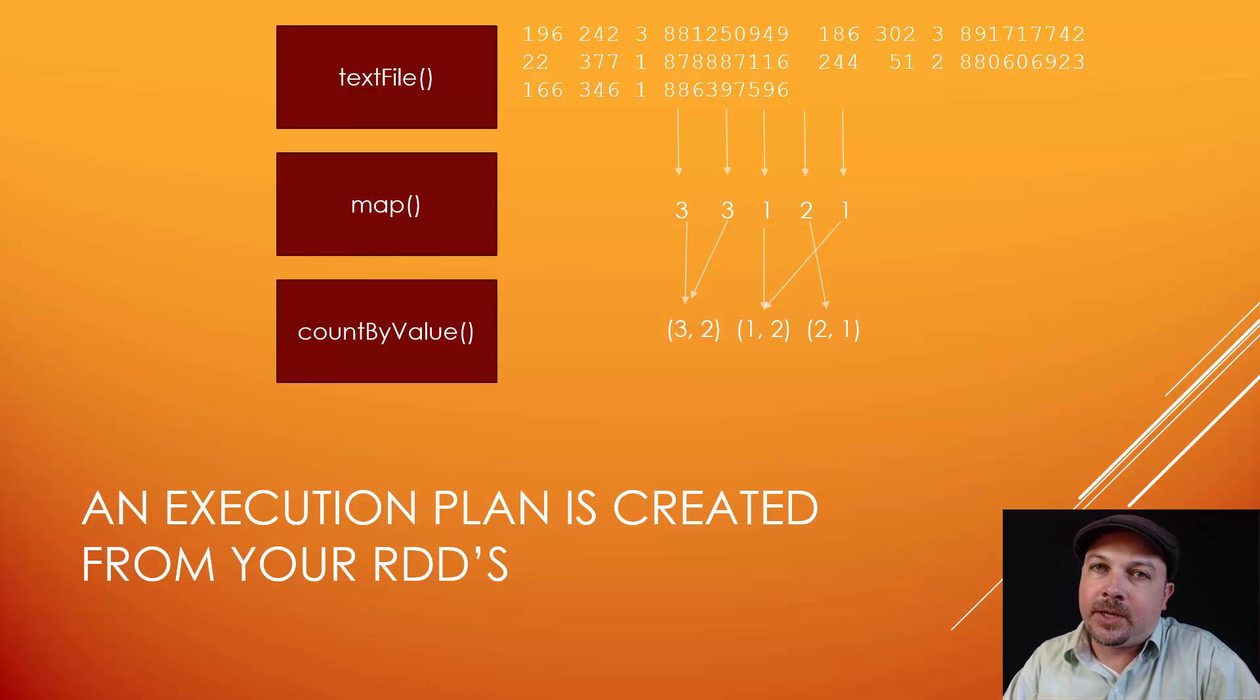Let's take a look at that ratings counter example from the previous lecture. What actually happened when we called count by value on that RDD? That was the last step in our script and it was an action on an RDD, which caused Spark to go back and figure out an execution plan for how to get the results we asked for. It keeps track of all the things we've chained together from different RDDs and how they connect to each other. Based on that information, it constructs a directed acyclic graph. In this case, it might be a very simple one that looks a little bit like this.